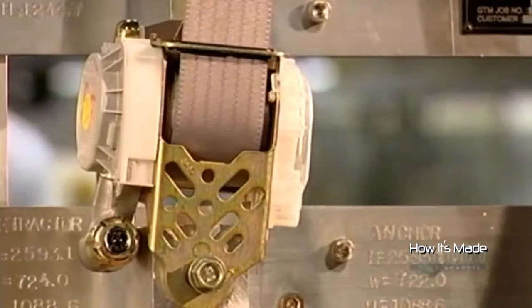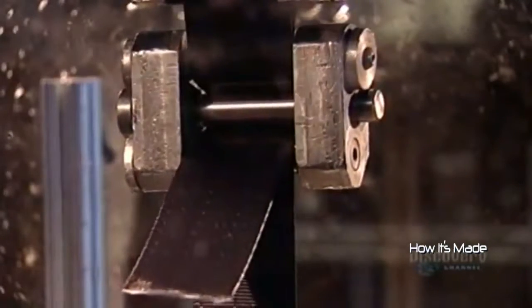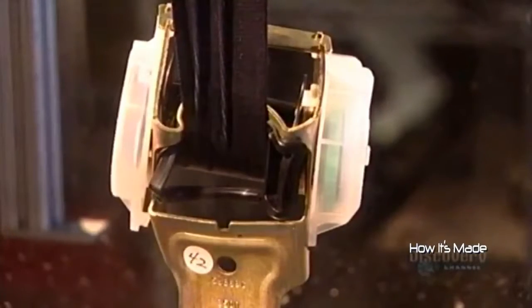Every seat belt design goes through extensive testing before going into production. This machine assesses how much pull the webbing and retractor can withstand before breaking.